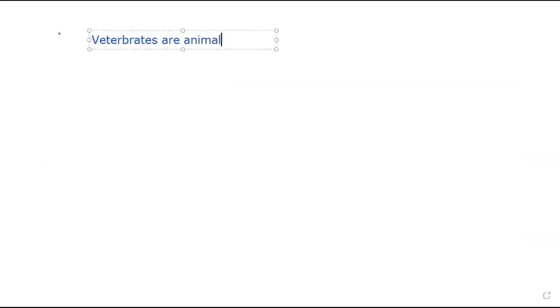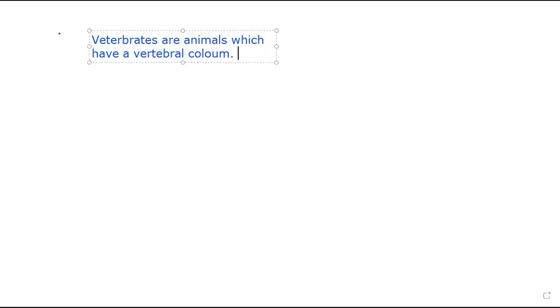Vertebrates are animals which have a vertebral column — that is your backbone or spine. The spinal cord consists of nervous tissue, and the vertebrae are the bones that make up the backbone. In the middle of each vertebra is the spinal cord, surrounded by those bones. All together, this is known as the vertebral column.